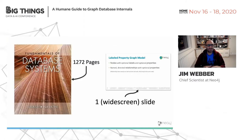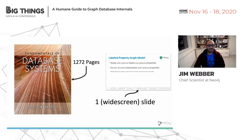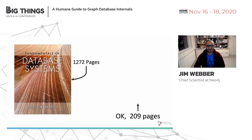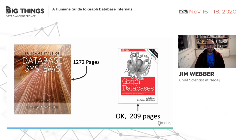If you compare that to relational databases — I'm sure many of us read El Masri and Navathe at university — it's quite a compact data model: one widescreen slide compared to 1,272 pages. Even the graph databases book from O'Reilly is only 209 pages.